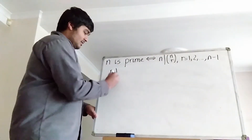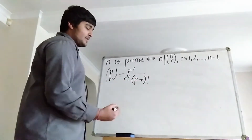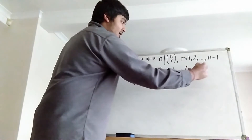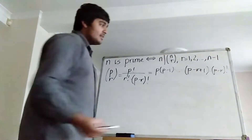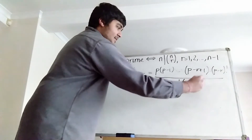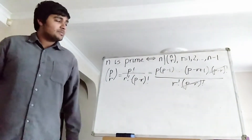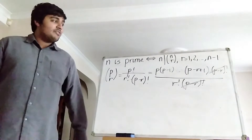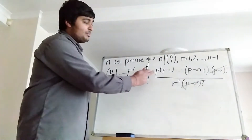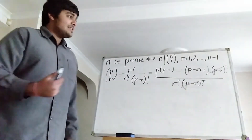Well, what's p choose r? That's just p factorial all over r factorial times (p minus r) factorial. We can write the top as p times (p minus 1) times dot dot dot all the way up to (p minus r plus 1) times (p minus r) factorial. The (p minus r) factorial cancels on the bottom, leaving us with p times (p minus 1) times dot dot dot all the way up to (p minus r plus 1), divided by r factorial. Now remember, this is still going to be an integer. But notice that the numerator is clearly divisible by p, because it's got p times an integer. But the denominator never divides p.